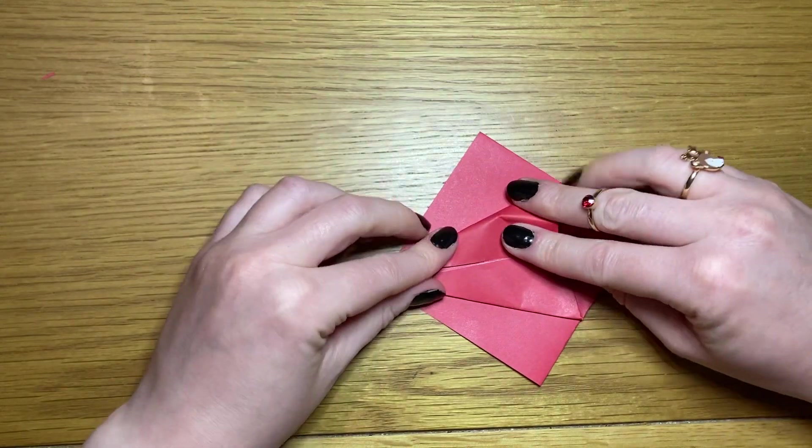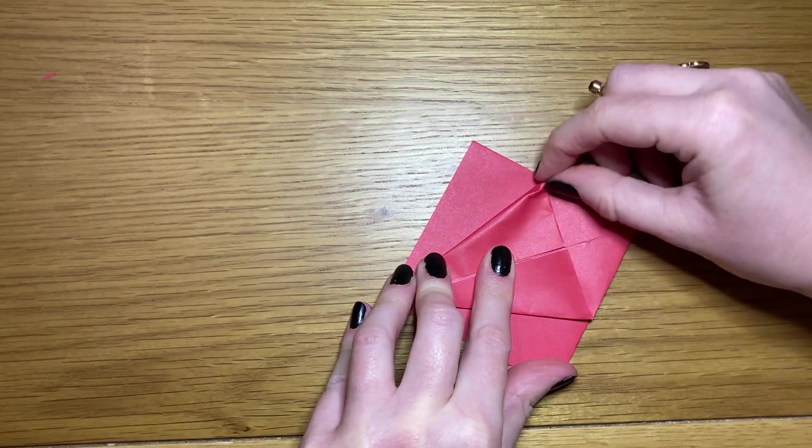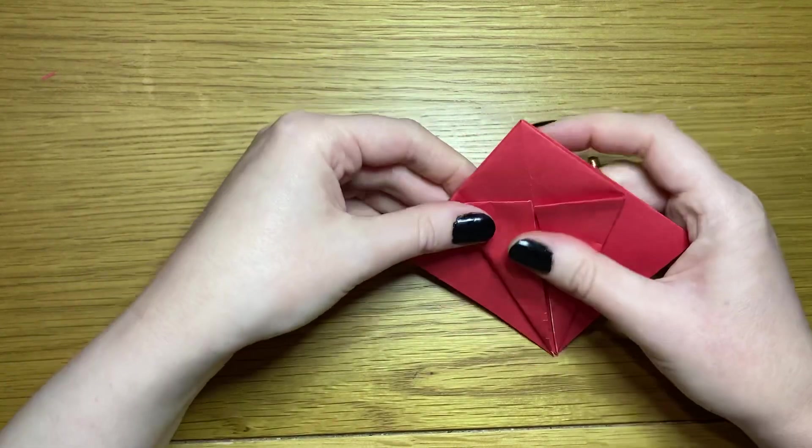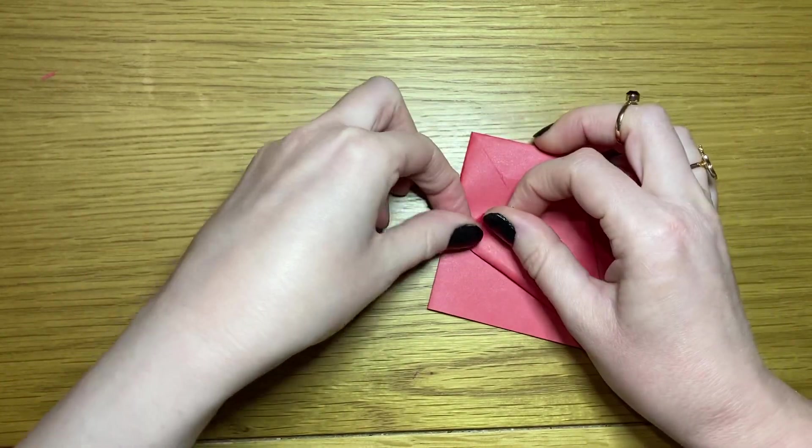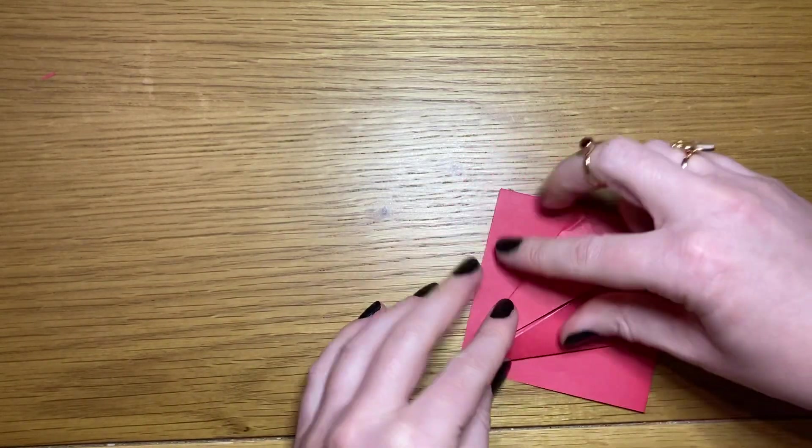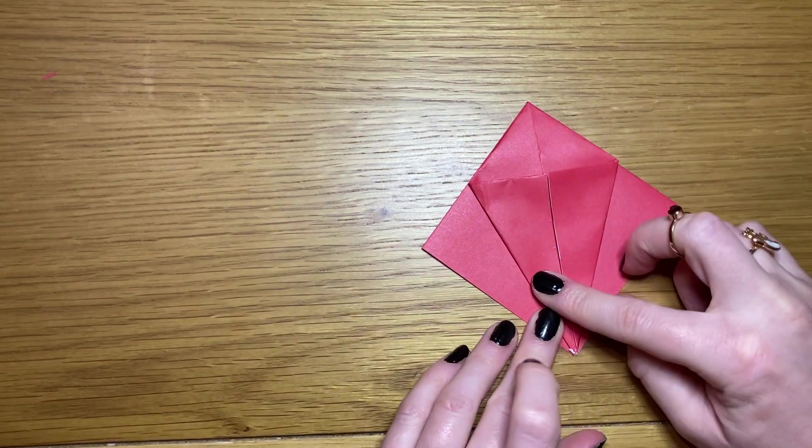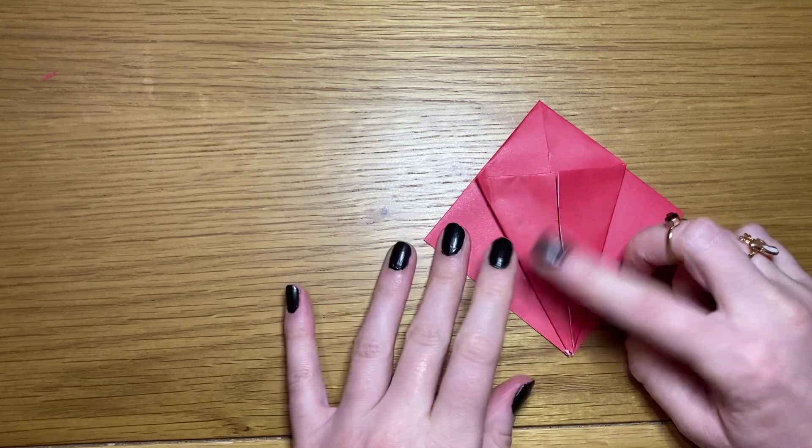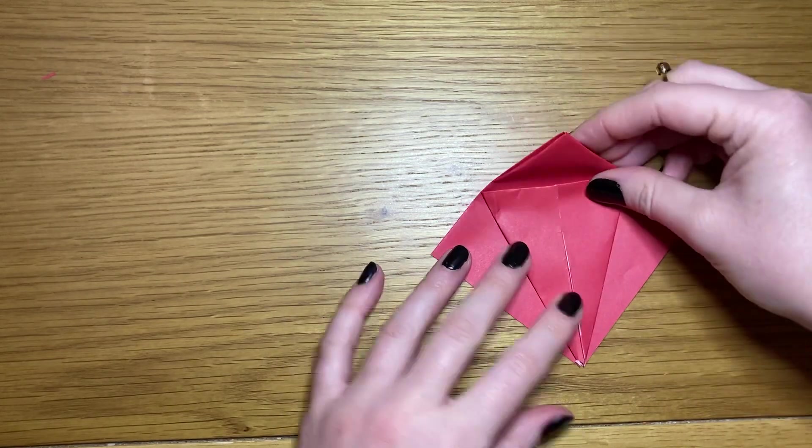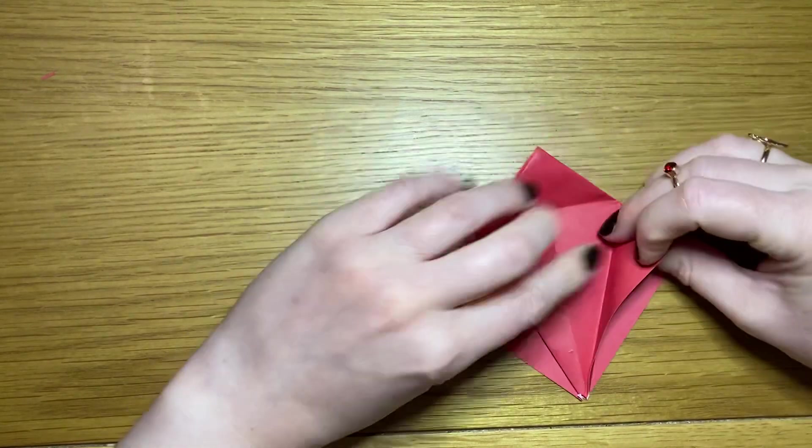Repeat on the west side, and what you're going to have now on your top layer is this large triangle and small triangle. Where they meet, fold the small triangle down and then open it all back out.